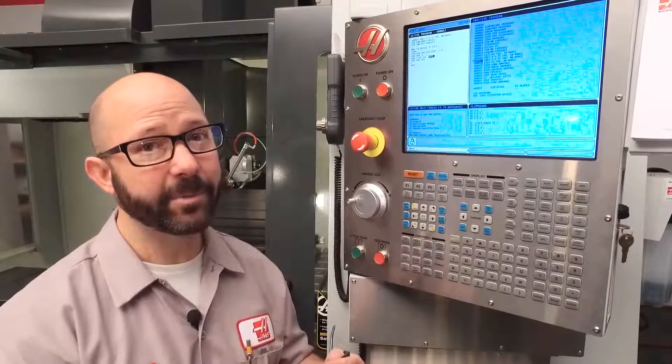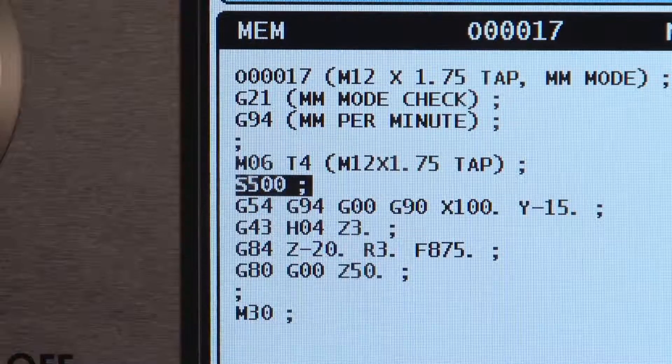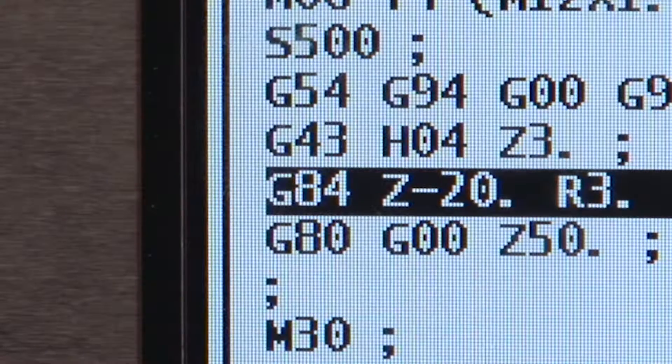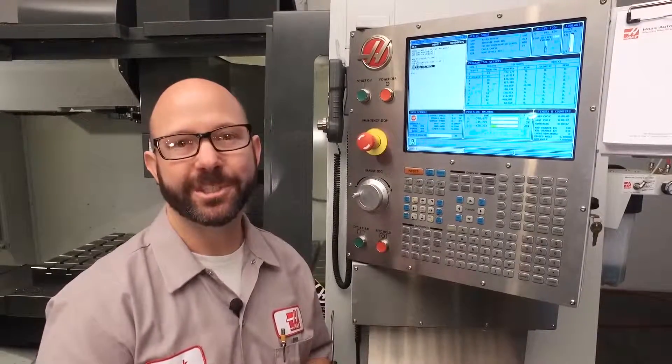Now you might have noticed that when we enter our S500, we did not put in an M3. The G84 cycle is going to start and stop the spindle as necessary. If we add an M3, it's just going to make the program take longer. Also, we used a G84 because we're using a right-hand tap. If you were going to cut a left-hand thread, we'd use a G74. You can look up G74 in the manual.